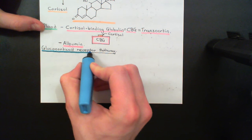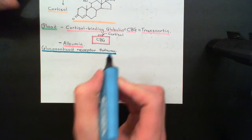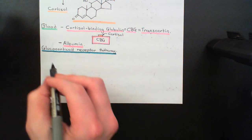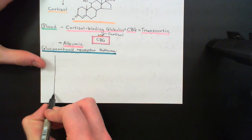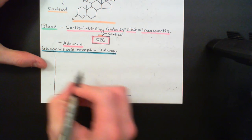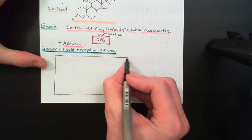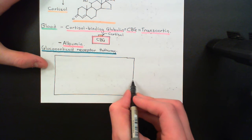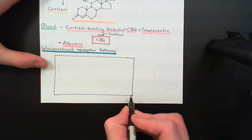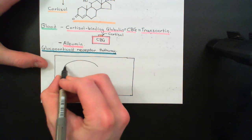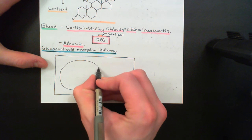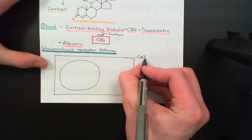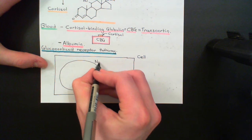I'm just going to draw an arbitrary cell, and we're going to draw the pathway out for this cell. This box represents an arbitrary cell in your body, and we're also going to need to mark on this picture the nucleus of the cell. So this is some cell here, and this is its nucleus here.